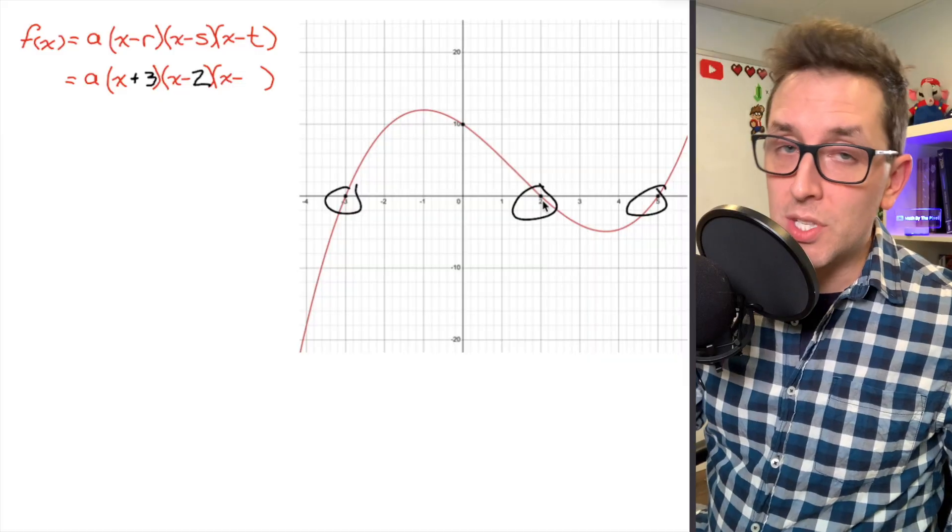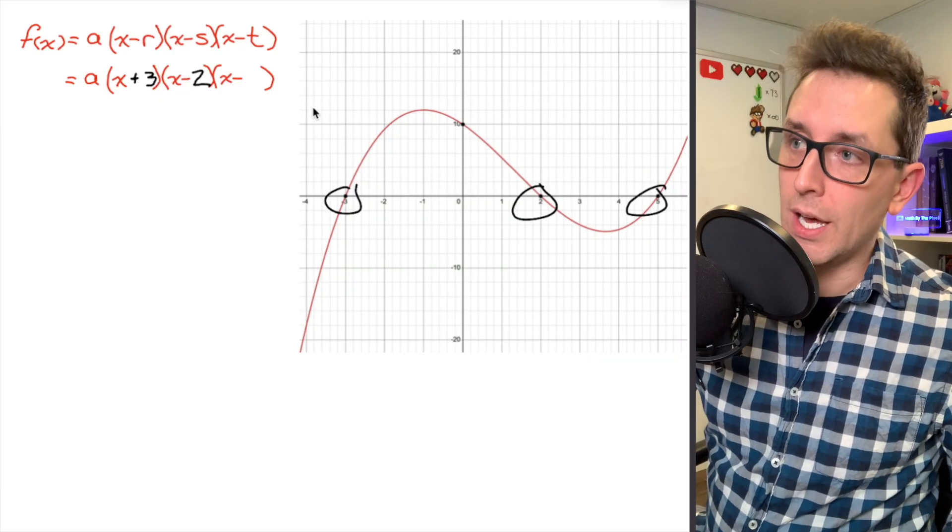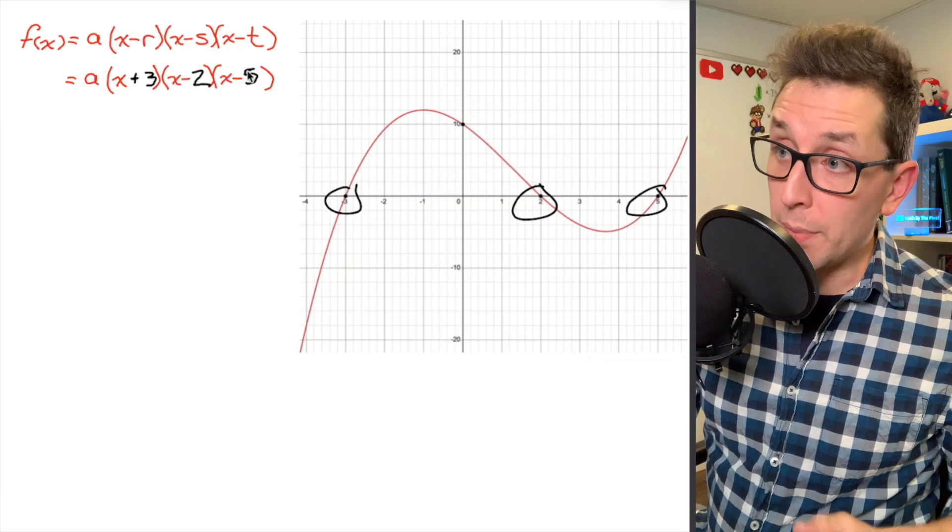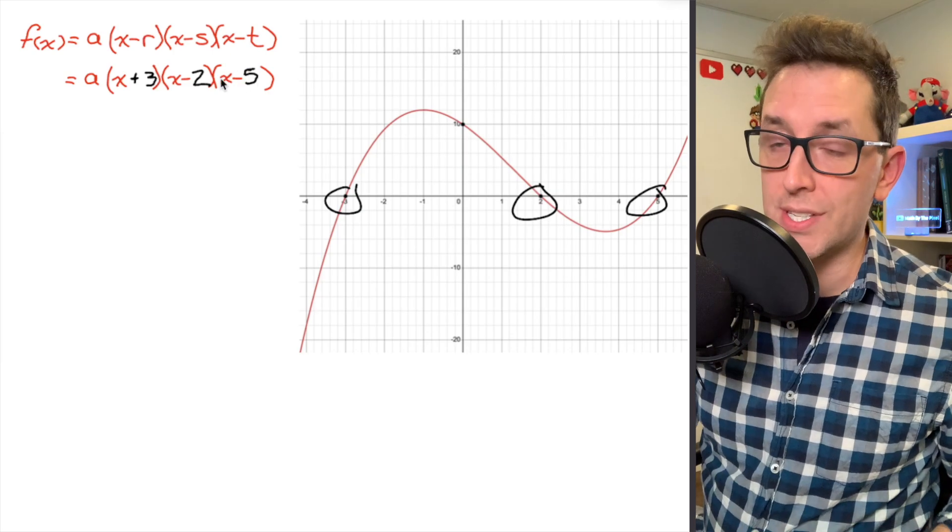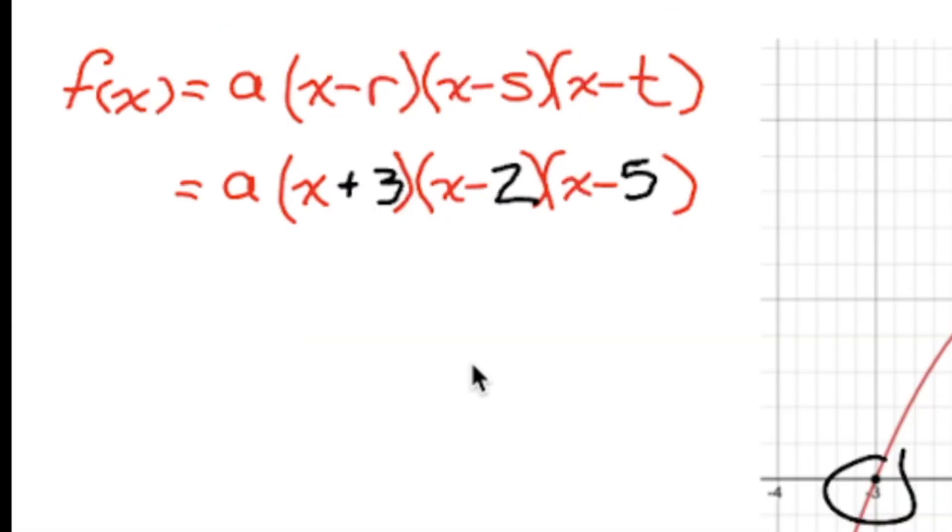Moving right along to the next x-intercept, you can see that I have one located at 5. I'm going to replace t with 5. And because that 5 was positive, I don't have to worry about that subtraction sign. I can leave it just as it is. So we're getting pretty close to what looks like an equation of a polynomial function.